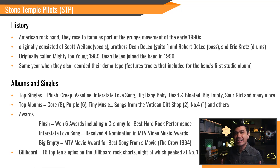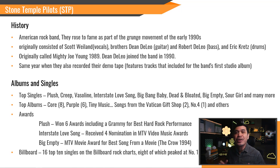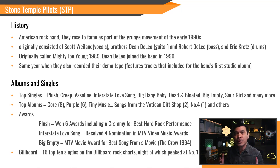Band's albums and singles. You probably already heard some of their songs such as Plush, Creep, Vaseline, Interstate Love Song, Big Bang Baby, Dead and Bloated, Big Empty, Sour Girl, and many more. Their top albums are Core, which won 8 Platinum, Purple won 6, an album Songs from the Vatican Gift Shop, and Number 4 also won Platinum.